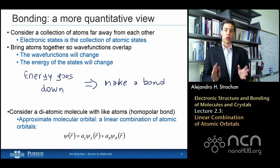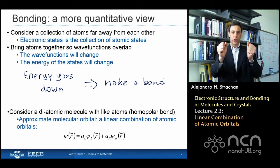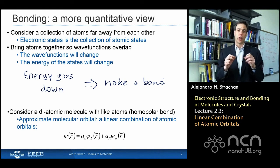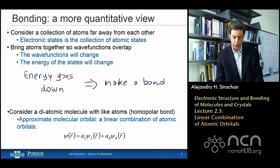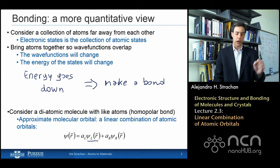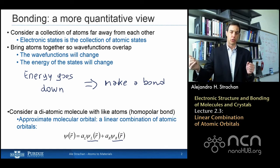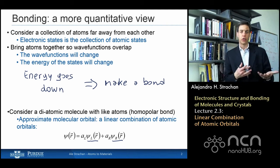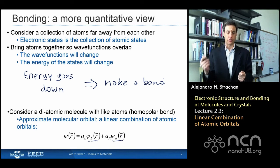We're going to consider a diatomic molecule made out of two identical atoms and we're going to describe the wave function of the molecule as a linear combination of atomic orbitals. Psi_left is the wave function of the atom on the left and psi_right is the wave function of the atom on the right — these are known functions. What I don't know are the coefficients that go in front of them, a_left and a_right.